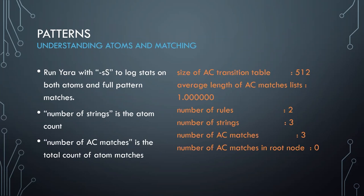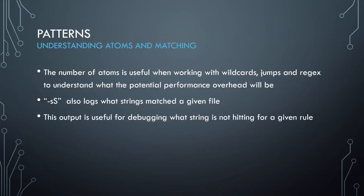The number of AC matches is essentially your atom match count. If you're getting a ton of AC matches relative to the number of rules, you probably have some weak atoms somewhere. When using wildcards, jumps, and regexes in particular, this flag is very useful to watch for. It also helps debug when a string isn't hitting for a given rule, since it also outputs what rules and patterns hit which files.